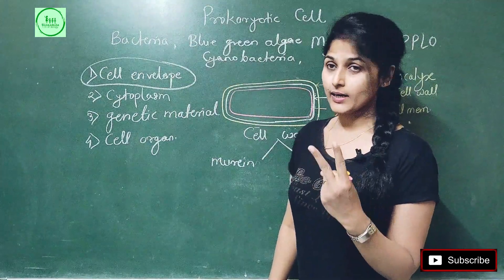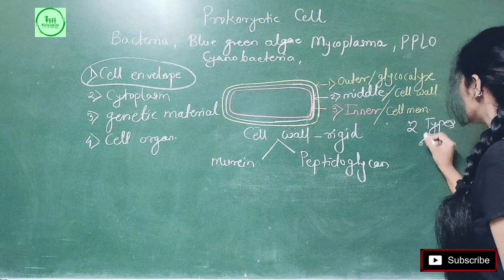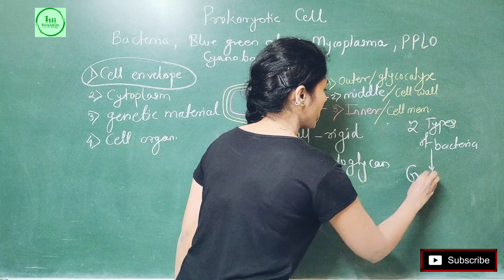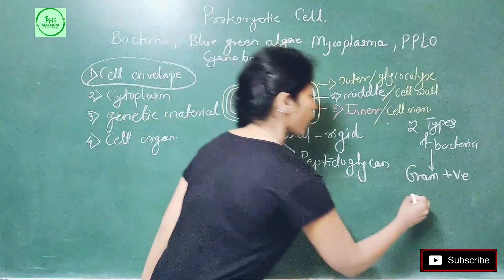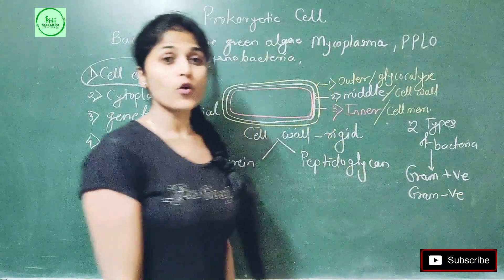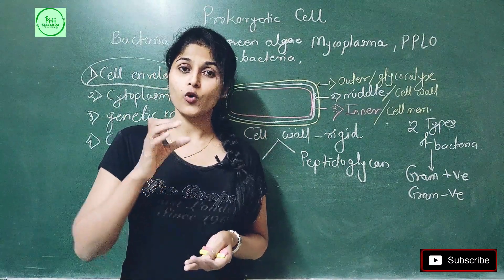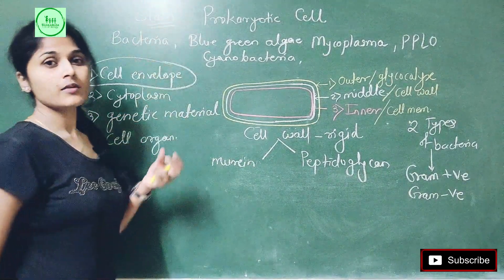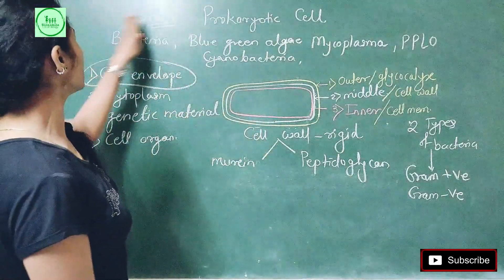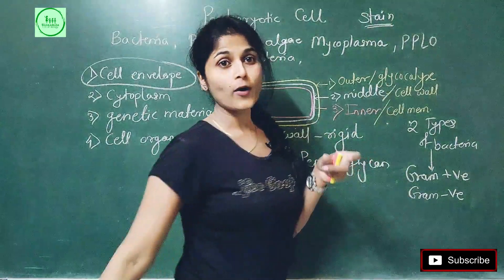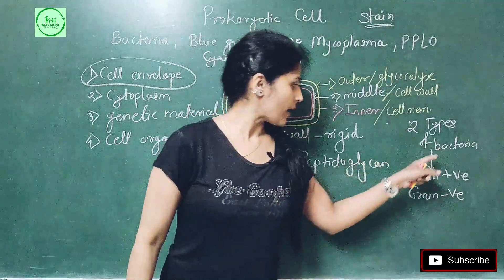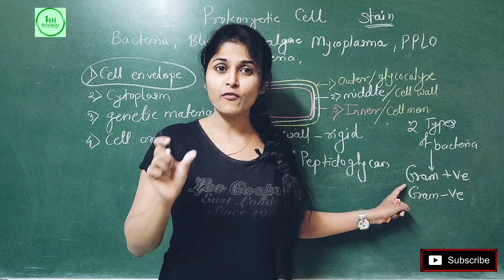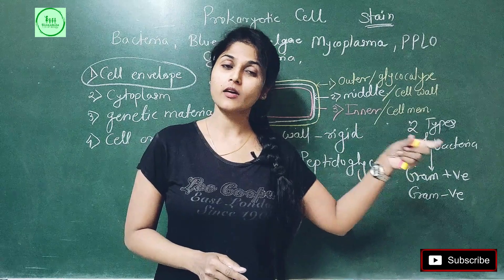There are two types of bacteria: gram-positive bacteria and gram-negative bacteria. This naming comes from scientist Kristen Gram, who invented a method to observe bacteria under the microscope. If you want to observe any live cell under a microscope, you have to stain it using a colouring liquid called a stain. Gram used a stain called crystal violet — very important for MCQs.